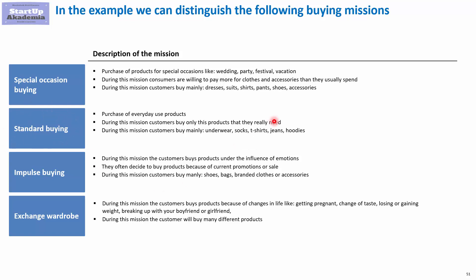We also have standard buying — so underwear, socks, t-shirts, jeans, and things like that. We will also have impulse buying, especially in categories like shoes, bags, and accessories. The final mission is exchange wardrobe, which is triggered by a change in lifestyle or maybe a change of size, and during this mission you obviously buy a lot of different things.